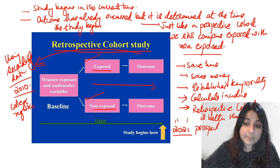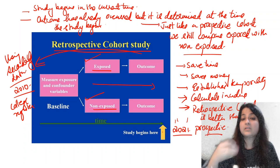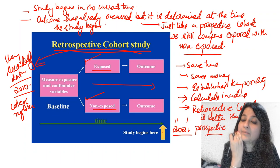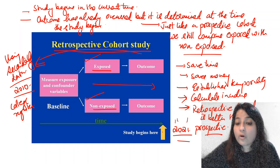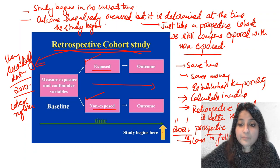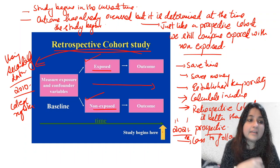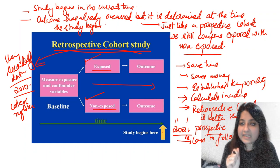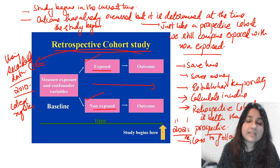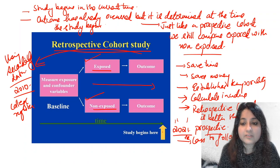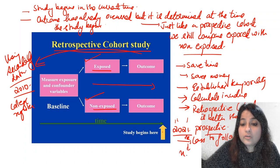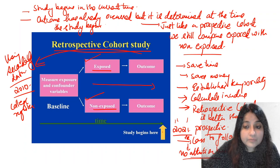A retrospective cohort is better than a prospective cohort in the evidence-based pyramid for establishing causality, because it saves time and money. It also prevents loss to follow-up — there is no attrition bias. In a prospective cohort, participants might leave your study in between, causing attrition bias. But here, the outcome has already occurred; you're just going back and distributing into exposed and non-exposed, so there is no loss to follow-up and no attrition bias.